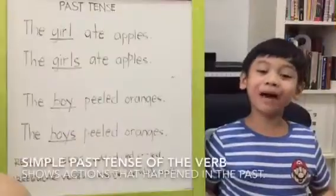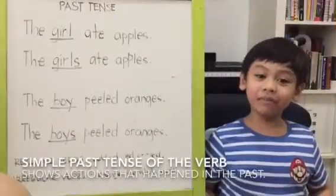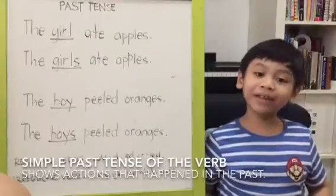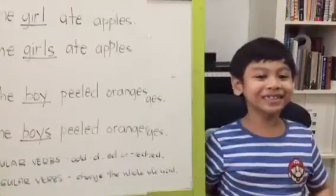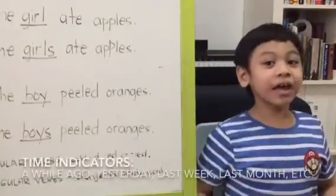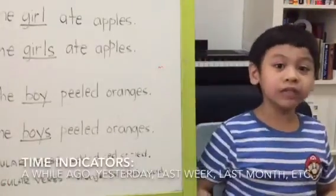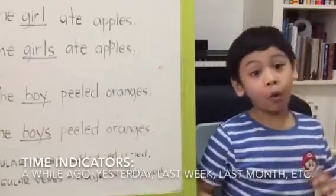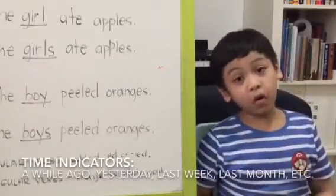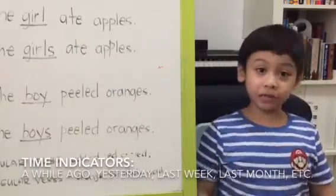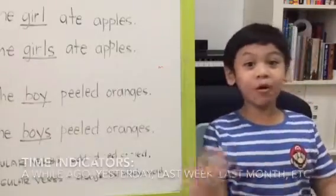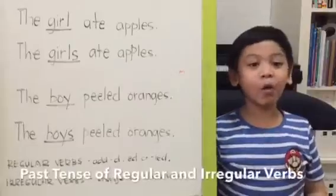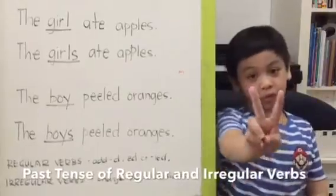Next, simple past tense of the verb shows actions that happened in the past. Time indicators include yesterday, a while ago, last week, and some more. For simple past tense, we have two rules.